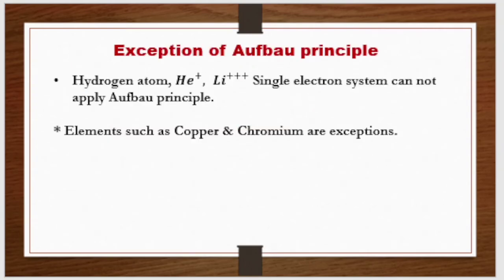The Aufbau principle has exceptions. The first exception is single-electron systems such as the hydrogen atom, the helium ion, and Li³⁺ — because all orbitals of a single-electron system have the same energy. The second exception includes elements such as copper and chromium.